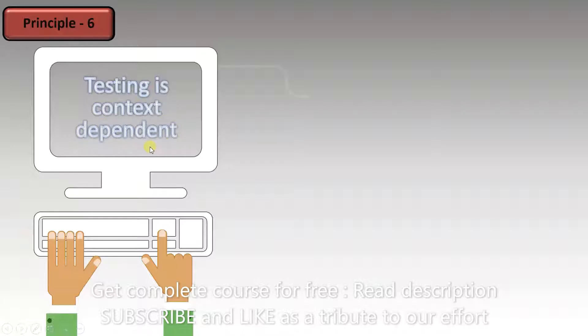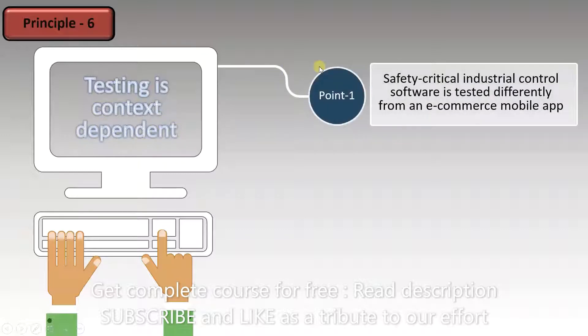Let's start breaking this down. Point 1: Safety-critical industrial control software is tested differently from an e-commerce mobile app. A mobile application and safety-critical software will be tested differently. We can't use the same process for both applications.